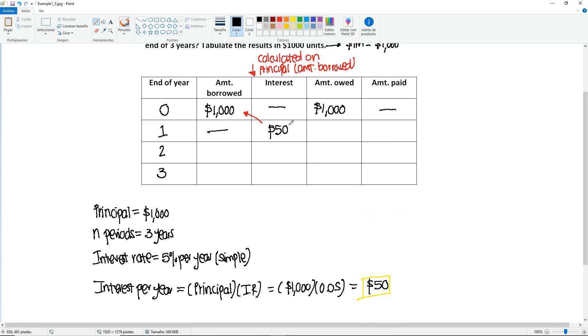So these $50 are going to go in the interest column. So now, how much is owed? What you previously owed last year, plus any interest accumulated. So it's going to be a total of $1,000 from last year, plus the $50 of the interest, and no need to pay anything yet.